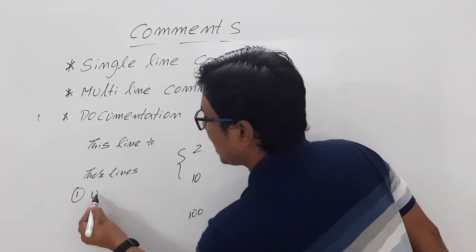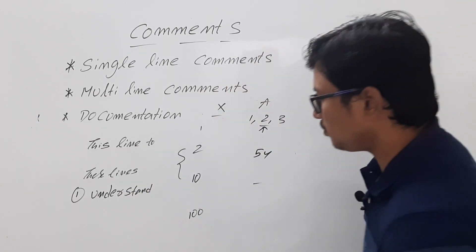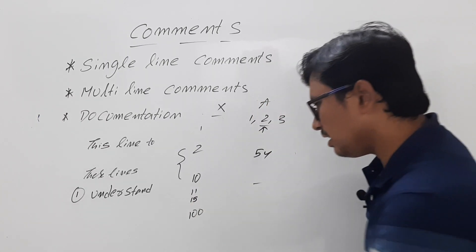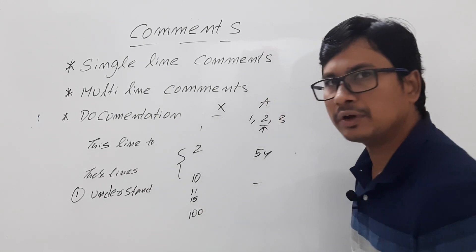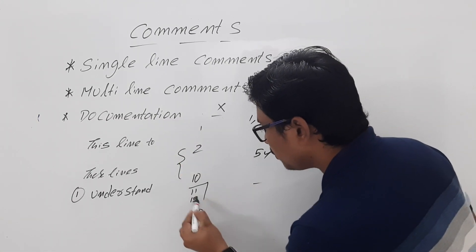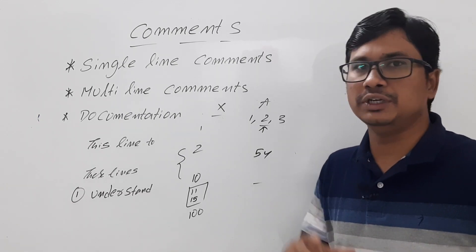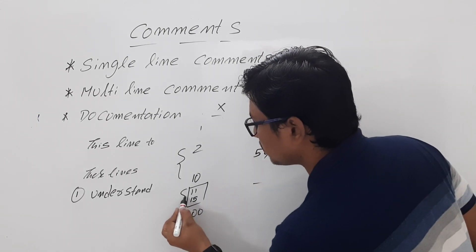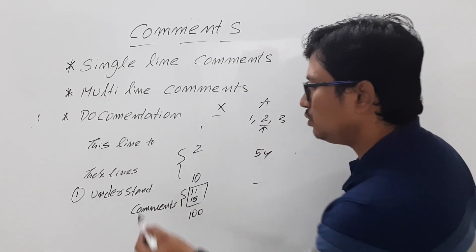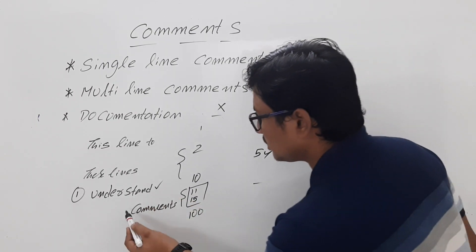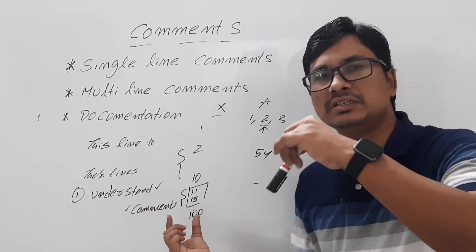The first advantage is to understand the program - it will improve the understandability of the program. The next thing is that suppose from lines 11 to 15, you don't want to execute certain code currently. You are debugging the program, understanding what is actually happening, and you don't want to execute lines 11 to 15, but you also don't want to delete them because you'd have to retype them. So you can use comments to pause statement execution. Comments can be used for two purposes: one is to understand the program for others, and another is to pause any statement from currently running.